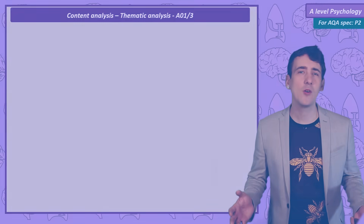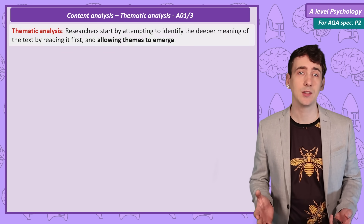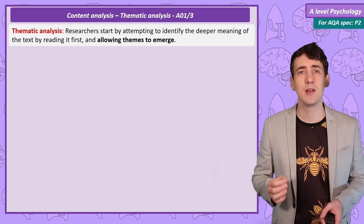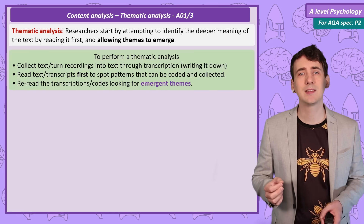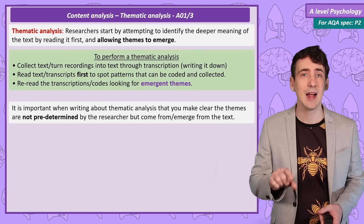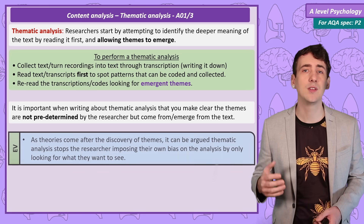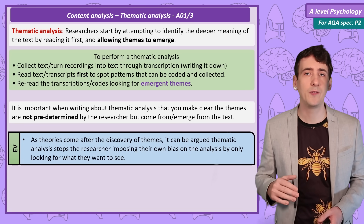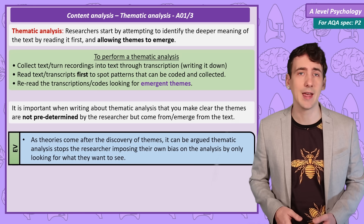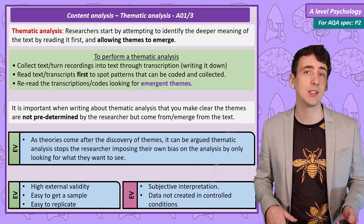Before finishing, I want to quickly discuss a variation on content analysis called thematic analysis. Rather than starting with predetermined categories and then counting their frequency like in content analysis, in thematic analysis the researcher starts by attempting to discover the deeper meanings of the text or interviews — carefully reading first, spotting patterns that can be coded, and then identifying themes from that process. We call those themes emergent. This is a more flexible way of analysing qualitative data, with theories coming after the discovery of themes, and this is intended to stop the researcher imposing their own ideas onto the text. Thematic analysis shares many of the strengths and negatives of content analysis.